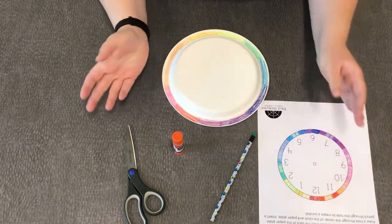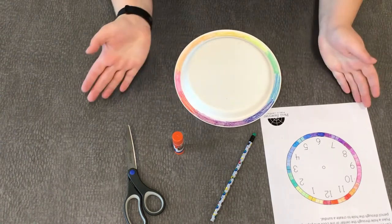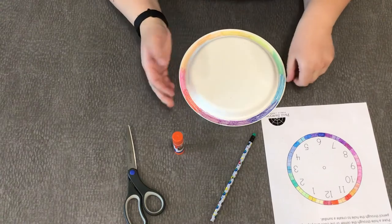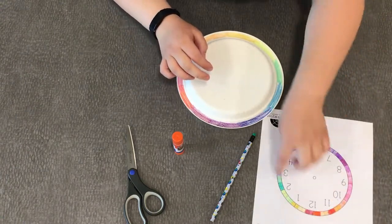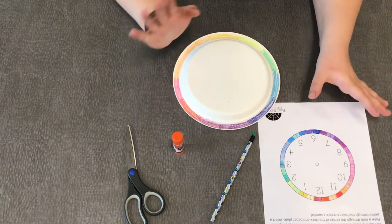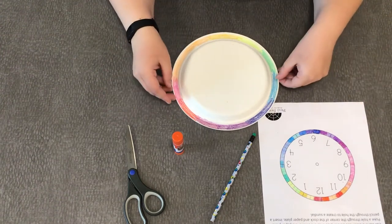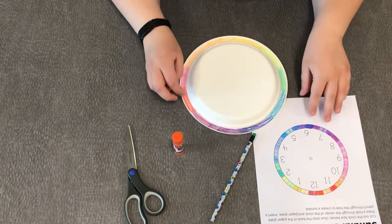The first step is completely optional but I had a lot of fun with it. I colored and decorated my sundial plate and my clock face so it'd be kind of a fun colorful sundial. That's completely up to you. If you want to leave it blank you can, but I made mine super colorful and fun because I love color.